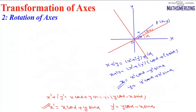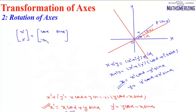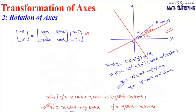The third method is the matrix method. We can write the new coordinates X dash, Y dash as a matrix product: [cos alpha, sin alpha; minus sin alpha, cos alpha] multiplied by [X; Y]. Multiplying the first row gives X cos alpha plus Y sin alpha, which is X dash, and multiplying the second row gives minus X sin alpha plus Y cos alpha, which is Y dash. To remember a simple formula, the matrix method is the simplest — just remember the matrix [cos alpha, sin alpha; minus sin alpha, cos alpha].